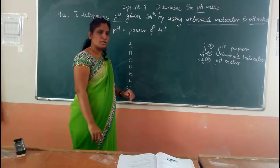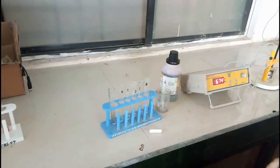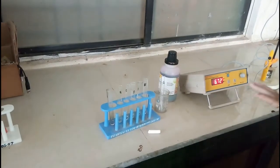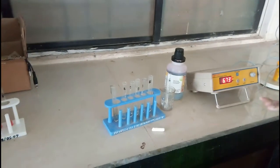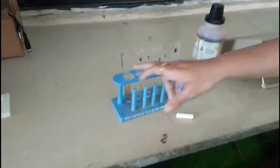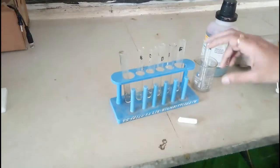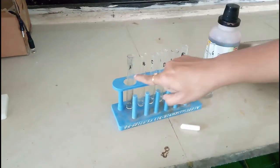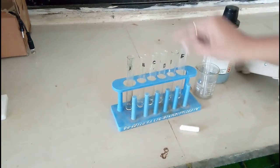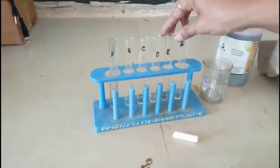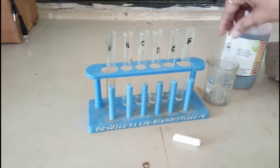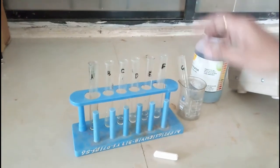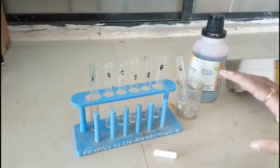So let us proceed to the experiment. The resources required are these seven test tubes, labeled A, B, C, D, E, F, and G. As space is not available, they are kept in a beaker on the test tube stand.